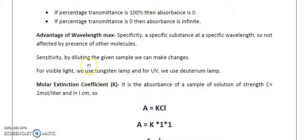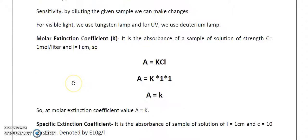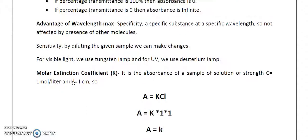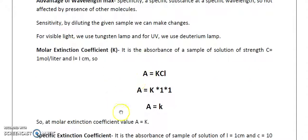Regarding specificity: a specific substance absorbs maximally at a specific wavelength (lambda max) and is not affected by the presence of other molecules or contaminants. Regarding sensitivity: by diluting the given sample we can make adjustments. For visible light spectrophotometry, a tungsten lamp is used in the visible spectrophotometer.